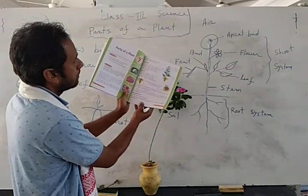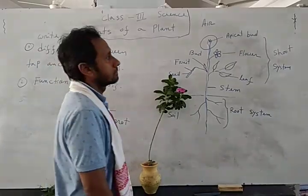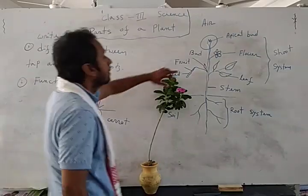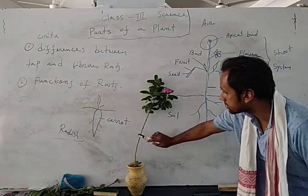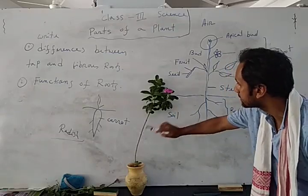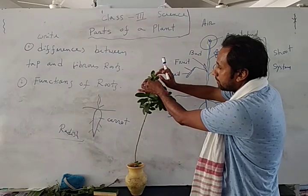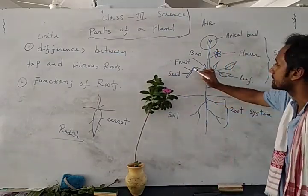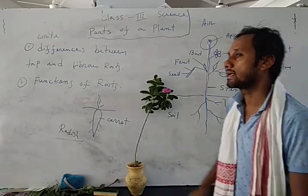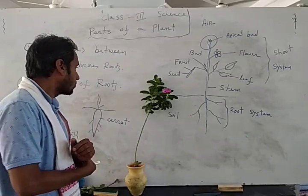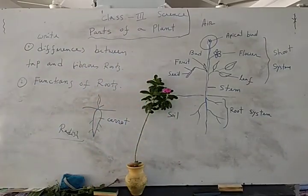Root fixes the plant firmly in the soil. In the last, I wind up this class. In the shoot system, above the soil: the main branch or stem, leaves, flowers, bud, and from the flower fruit is developed, and after the fruit, seed is developed. Thank you students, hope you enjoyed this class. In the next class — Part 2 — we will discuss about the stem portion.